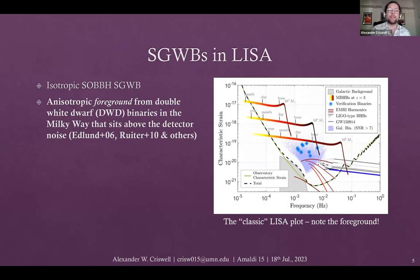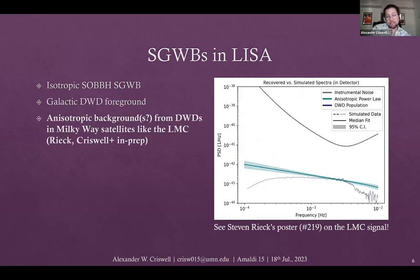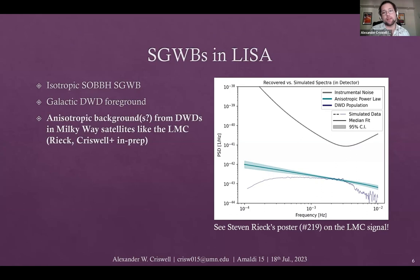The second source is different in two key ways: it's highly anisotropic, coming from all binary white dwarf systems in our own Milky Way galaxy; and it's so loud that it sits above the detector noise, often termed a foreground rather than a background. The Milky Way's dwarf galaxy satellites also contain white dwarf binaries — recent work by an undergraduate I work with, Steven Rake, has shown that the unresolved white dwarf binaries in the Large Magellanic Cloud may also be detectable by LISA as a highly localized anisotropic signal.